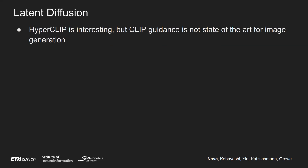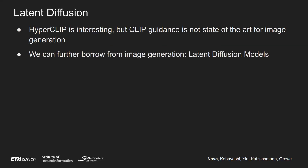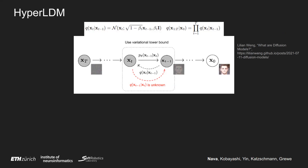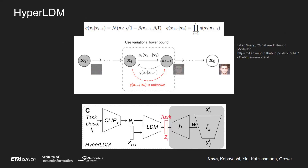HyperCLIP is interesting, but CLIP guidance is not state-of-the-art for image generation. We can further borrow from image generation techniques, and what is currently state-of-the-art is diffusion models. Specifically, we use latent diffusion models — a diffusion model on latent vectors instead of network weights. Diffusion models work by inverting a diffusion process: to generate samples from a high-dimensional data distribution, like images or in our case neural network weights, we apply the denoising model multiple times starting from random noise. Our Hyper-LDM works conditionally on the embeddings of task descriptors, denoising a randomly sampled latent Z into a latent that, when run through the decoder of the VAE, produces the neural network weights that solve our task.